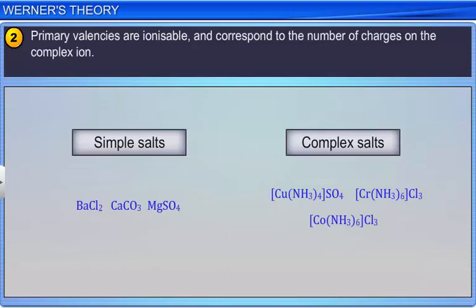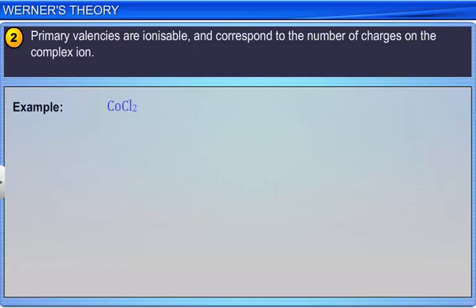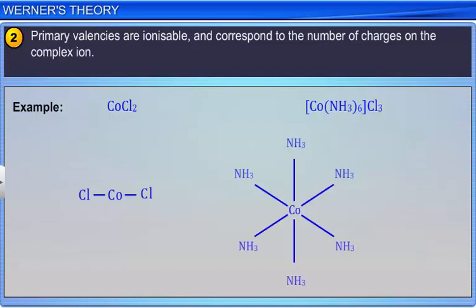For example, the primary valency of 2 in CoCl2 is satisfied by 2 chloride ions. Similarly, the primary valency of 3 in the complex CoNH3.6Cl3 is satisfied by 3 chloride ions. In modern terminology, the primary valency corresponds to the oxidation number.